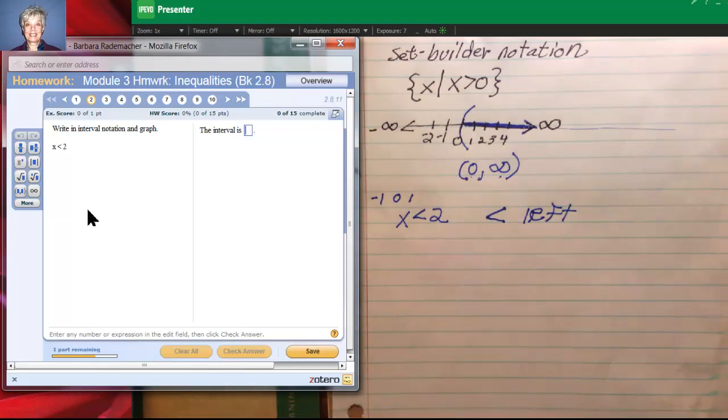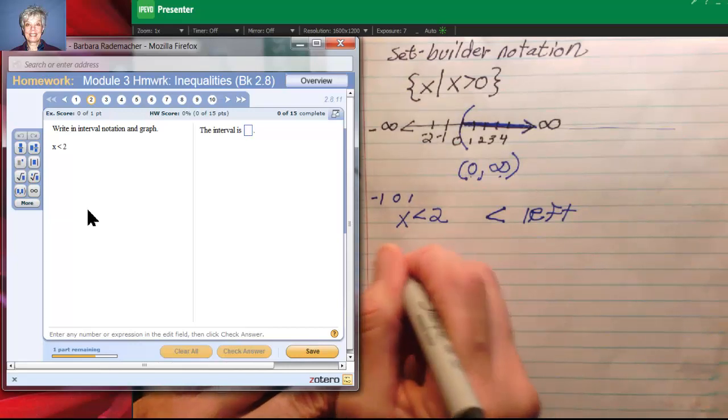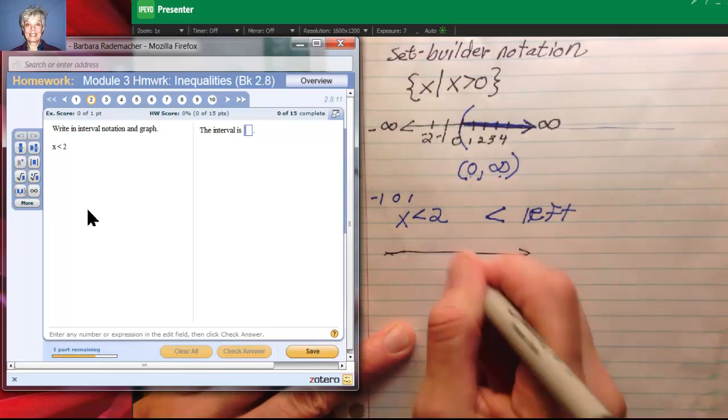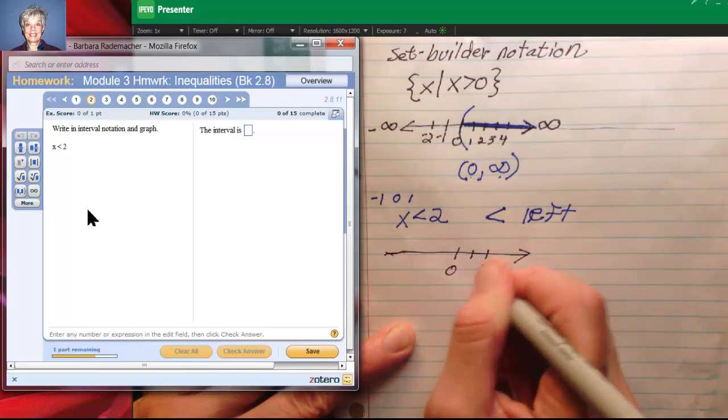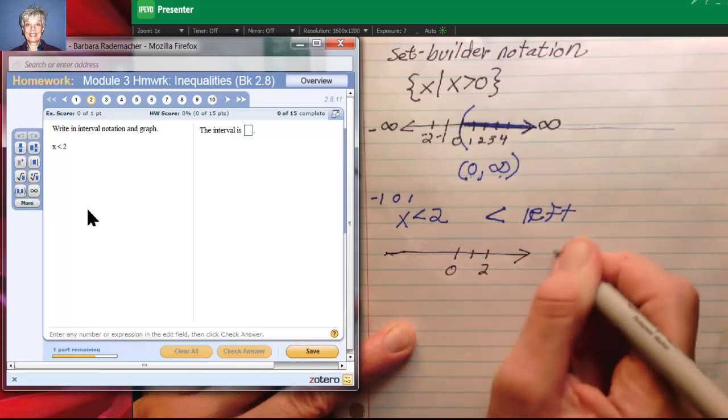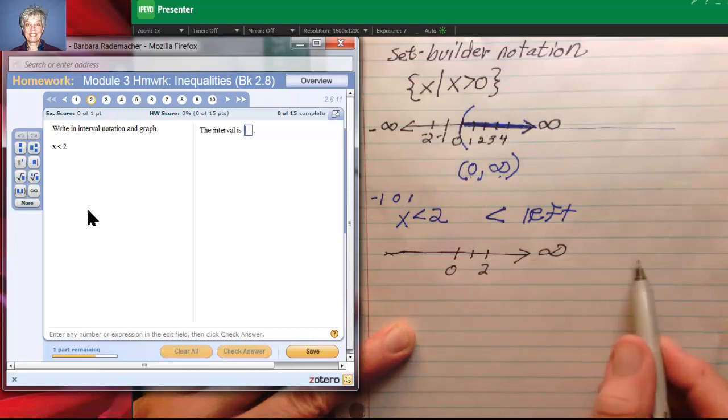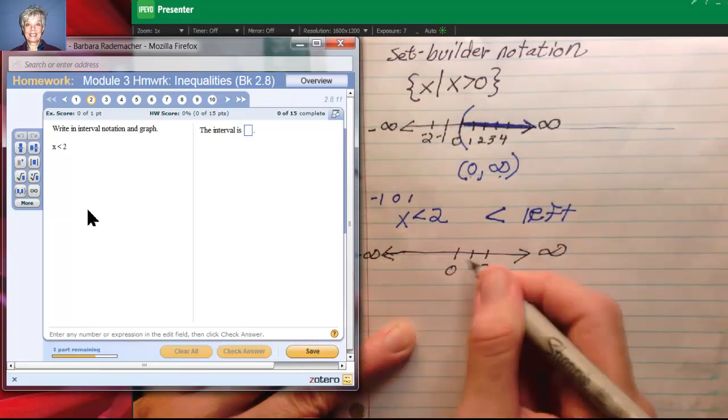So here, if we were graphing, I would graph a number line. Here's 0 in the middle, 1, 2, there's our end point 2. Here's infinity because the numbers get bigger as you go to the right. And here's negative infinity because the negative numbers go off to the left.